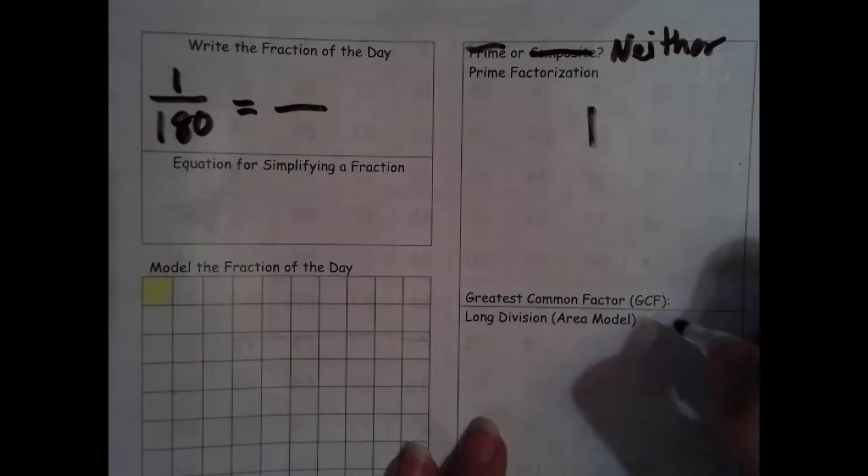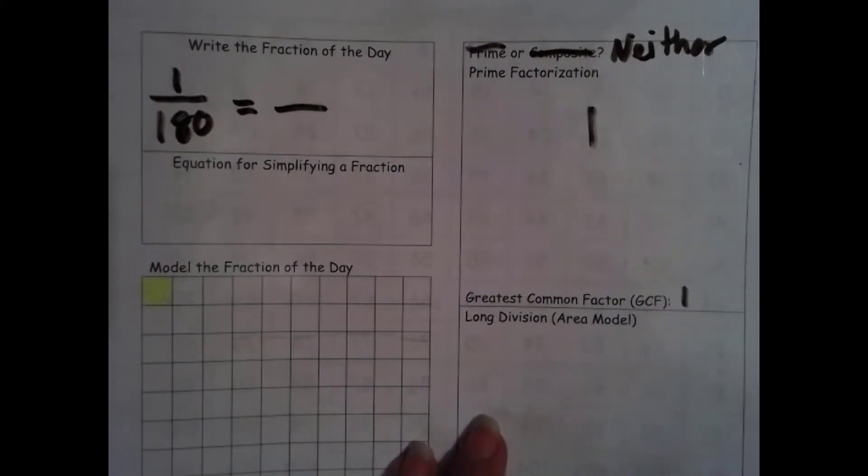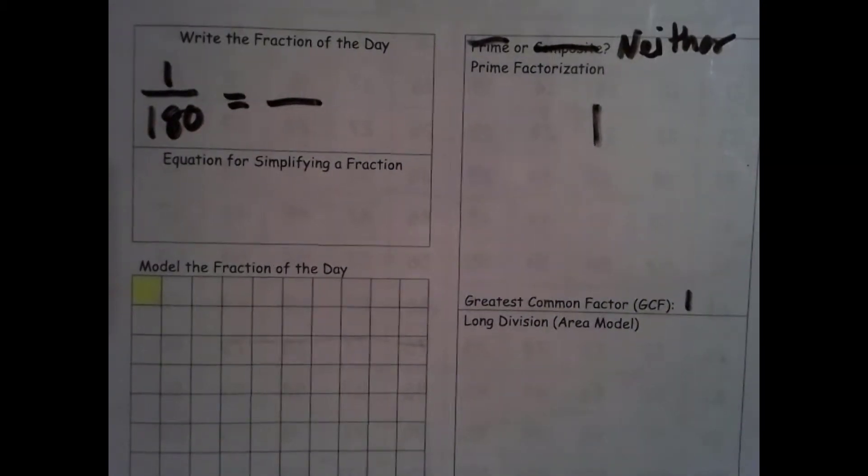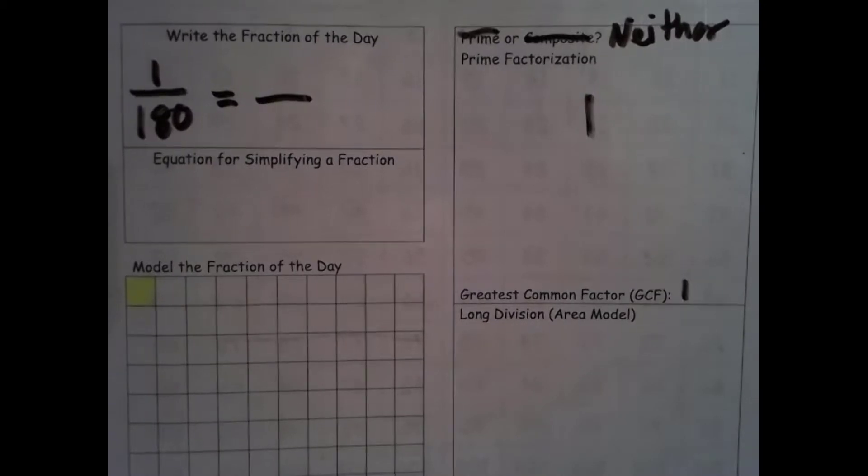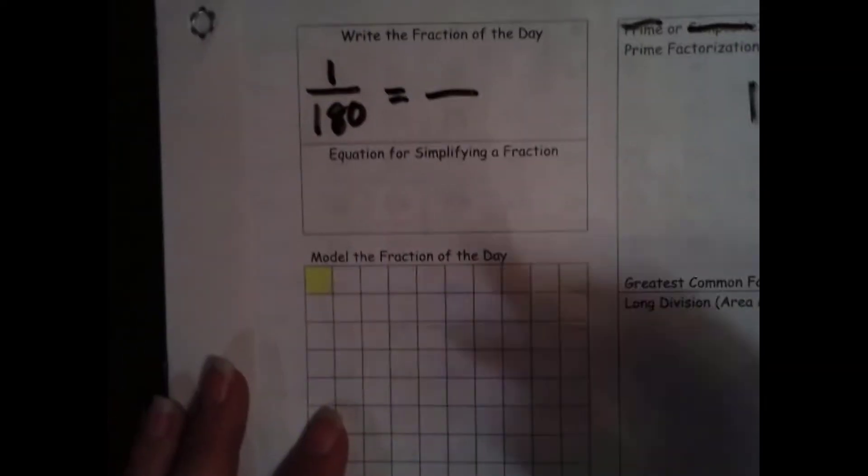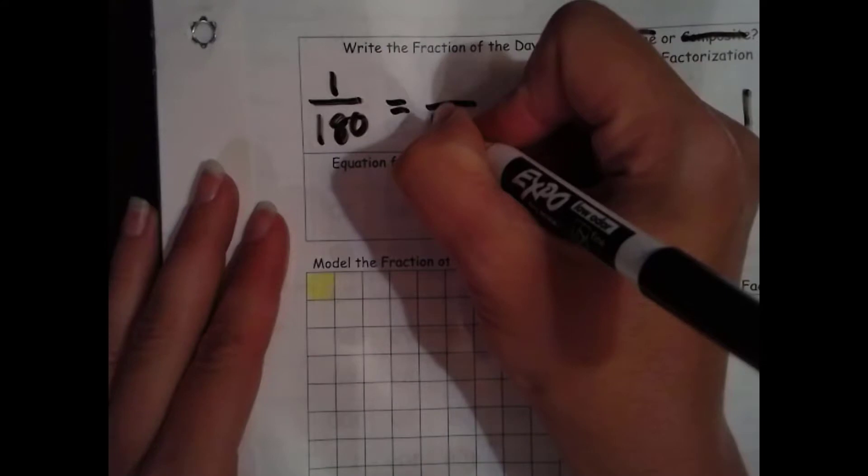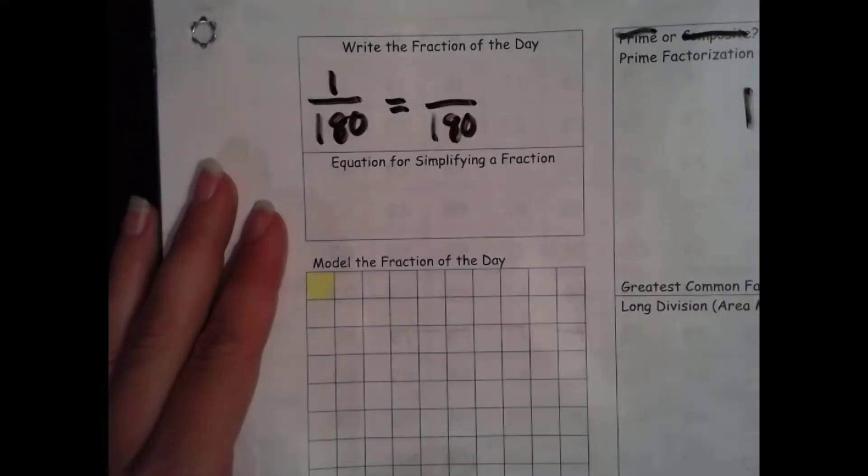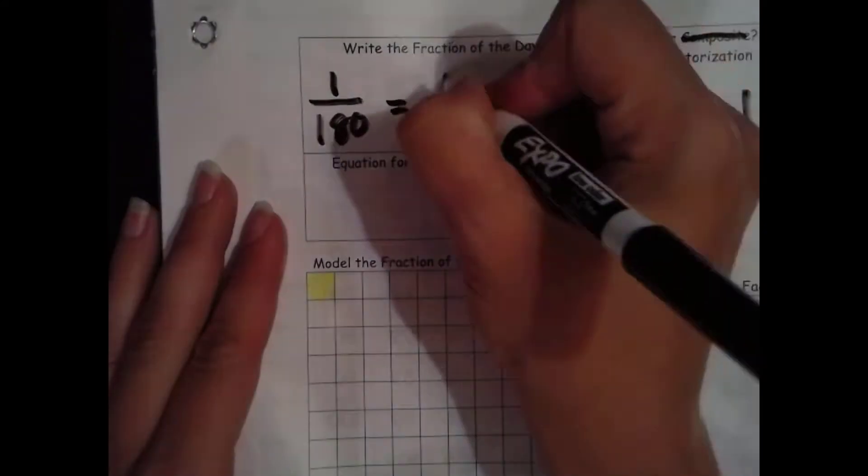But that means our greatest common factor is 1. And if you remember, that means we have to make groups of 1 and done. How many total groups of 1 do we have? We have a total of 180. How many groups of 1 are shaded in? 1.